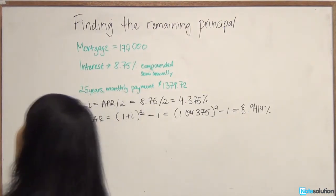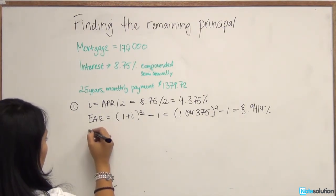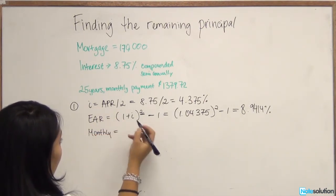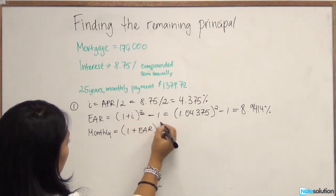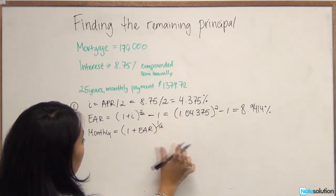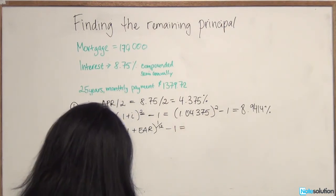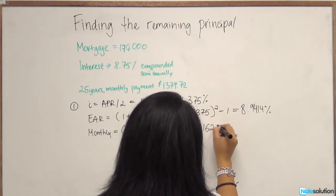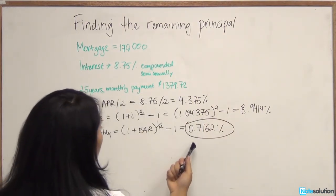Now that we have an annual rate, we can derive the effective monthly rate from that as well. The monthly rate from the EAR is 1 plus EAR to the power of 1 over 12, minus 1. That gives us 0.7162%. So this is our interest rate on a monthly basis.